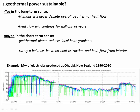But in the short term, geothermal power plants reduce local heat gradients. As we're pumping that cold water in and it's absorbing the heat energy, it's cooling everything down, and the heat gradients are reduced. It takes time for the heat to conduct upwards through the hot rock and replenish that heat energy. So if you end up extracting the heat faster than it replenishes upwards by conduction, then you're going to deplete your heat flow.